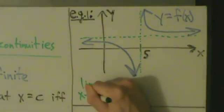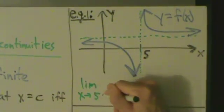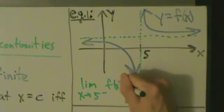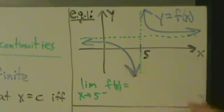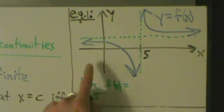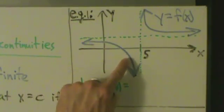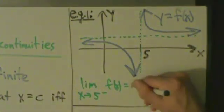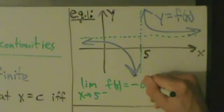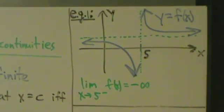The limit as x approaches 5 from the left of f of x — what's happening there? As x comes into 5 from the left, we're on this blue curve and y is going down, shooting off to negative infinity. So right away, we can say we have an infinite discontinuity.